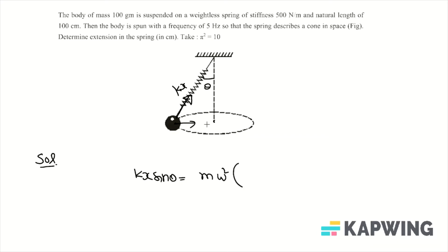The radius will be this length. Suppose the natural length is l₀, so this length will be l₀ plus x. The radius will be (l₀ plus x) sin theta. This is the equation of centripetal force, and from this equation itself we will get the value of x.